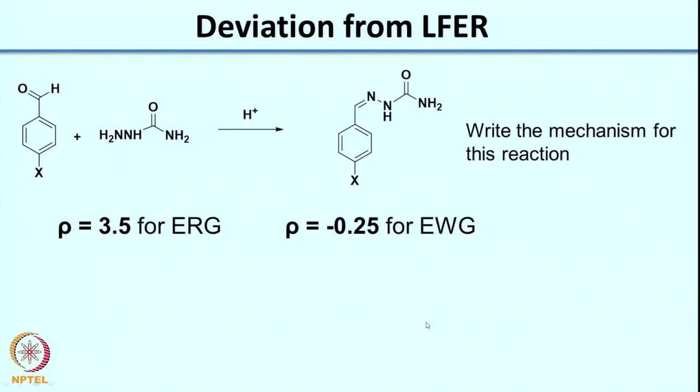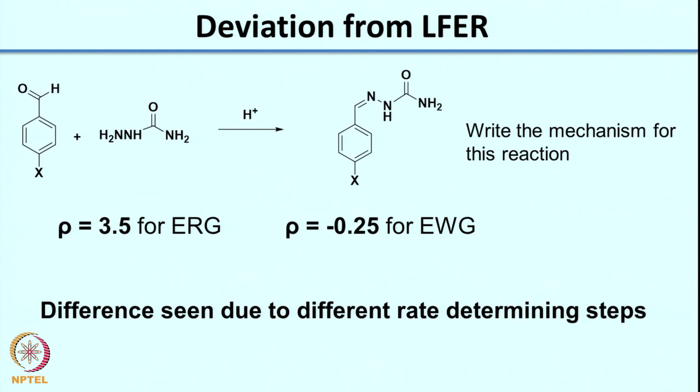Before leaving in the last lecture, I had asked you a question: why for the particular reaction which is the formation of a semicarbazone, two different rho values are observed. For electron-releasing groups you have a rho value of 3.5, and for electron-withdrawing groups you have a rho of minus 0.25. The first thing always would be to write the mechanism for the reaction. One hint is that in this case the difference is seen due to different rate-determining steps. Look at the mechanism carefully and identify whether the rate-determining step could change depending on the substituent.